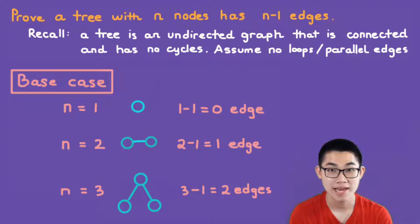Let's start with the base case. So when n is 1, we have only one vertex, so there are no edges. So 1-1 is 0, and this is true. This statement is true when n is equal to 1.